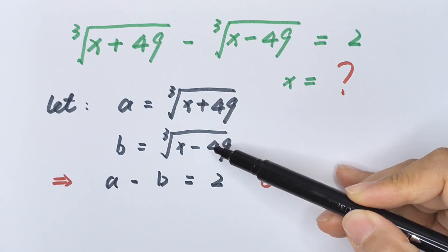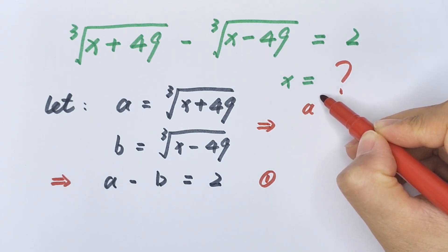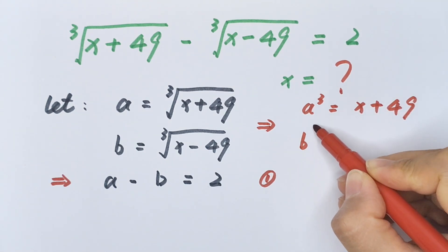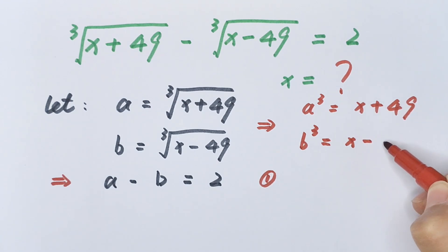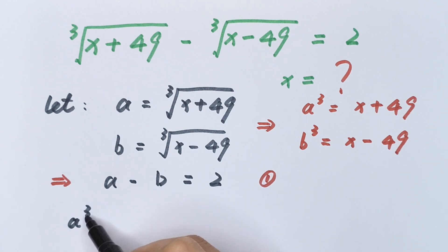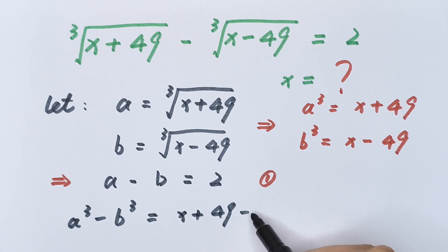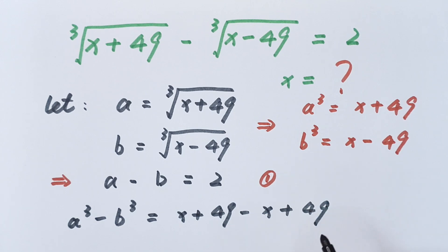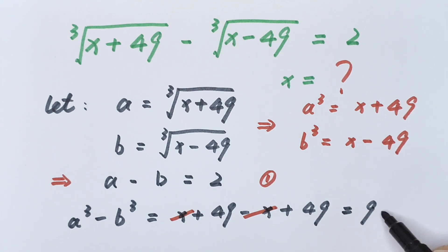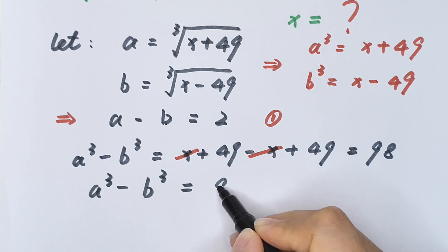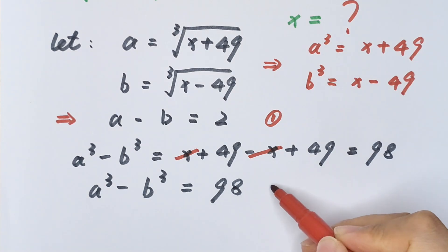From equation 1 we get a³ = x + 49 and b³ = x − 49. So a³ minus b³ equals (x + 49) minus (x − 49). The x terms cancel, so a³ minus b³ equals 98. We label this equation 2.